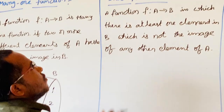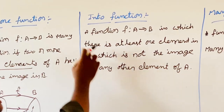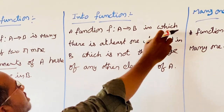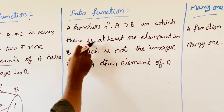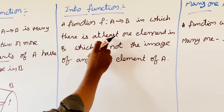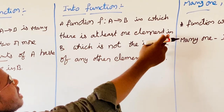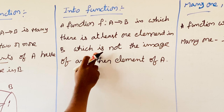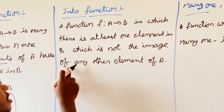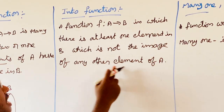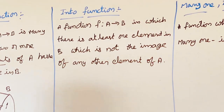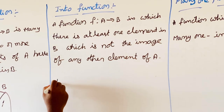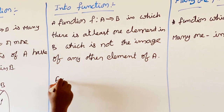Now, into function. A function f mapping A to B in which there is at least one element in B which is not the image of any element of A. Let us see an example.